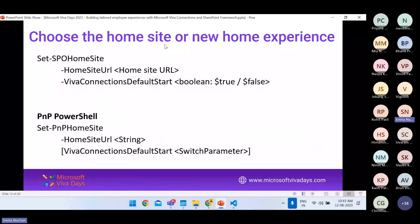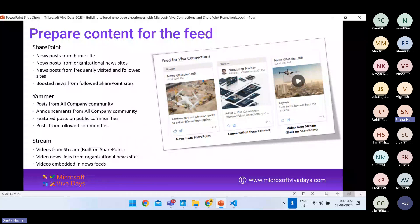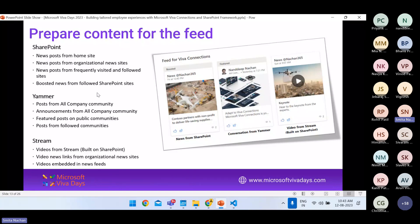You can just prepare content for your feed — showing content from SharePoint, Yammer, and Stream. From SharePoint you can show new posts from the home site, organizational news sites, frequently visited and followed sites, and boosted news from followed SharePoint sites. From Yammer you can post company community announcements, featured posts on public communities, and posts from followed company communities. From Stream you can show videos, video news links from organizational news sites, and videos embedded in the news feed.